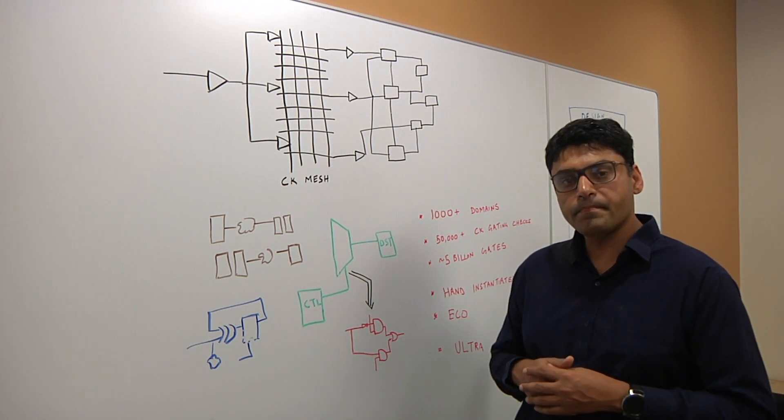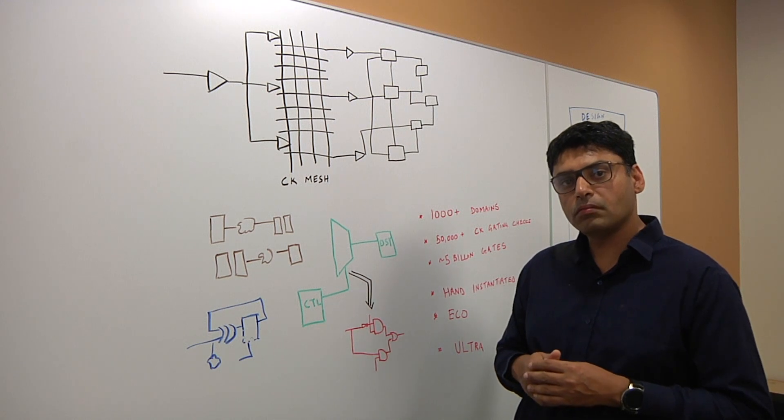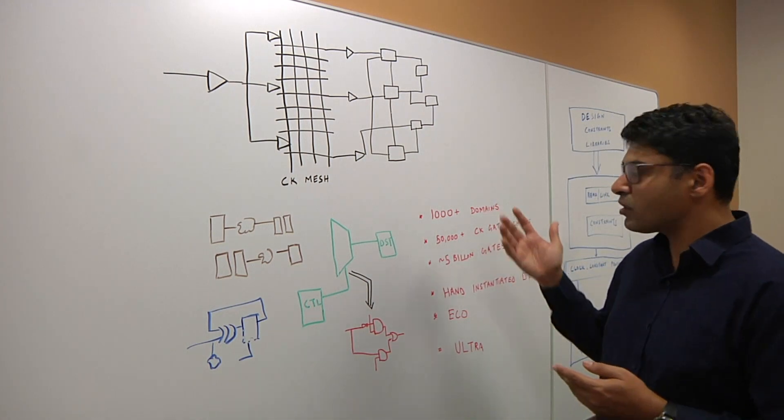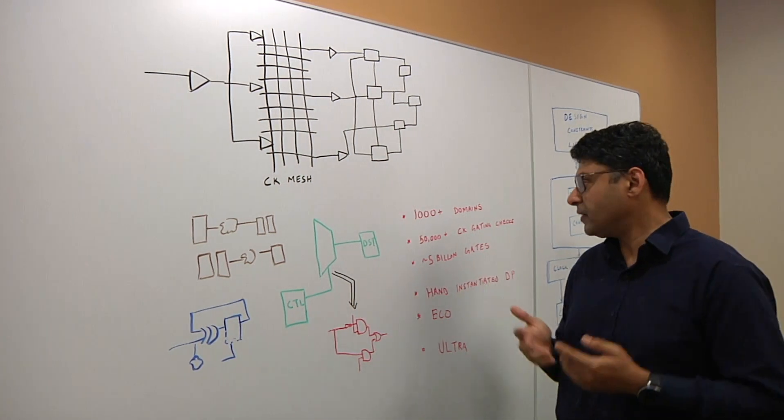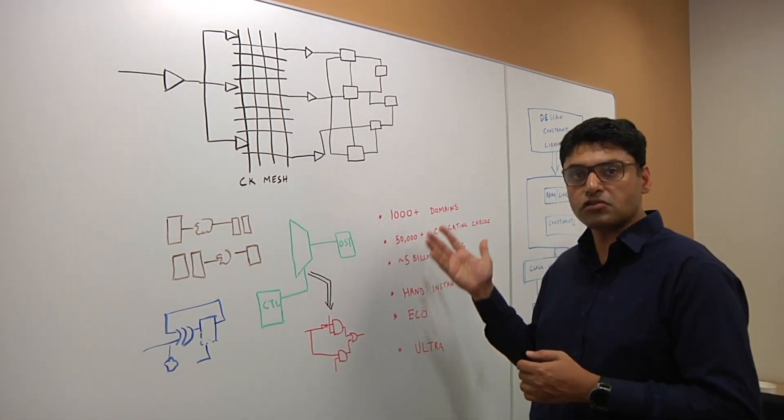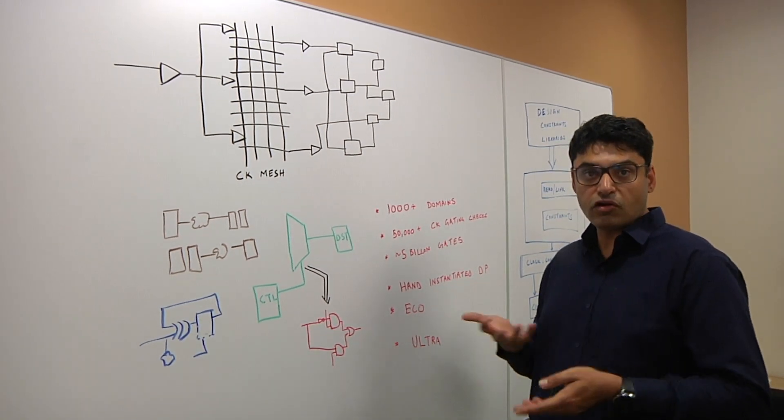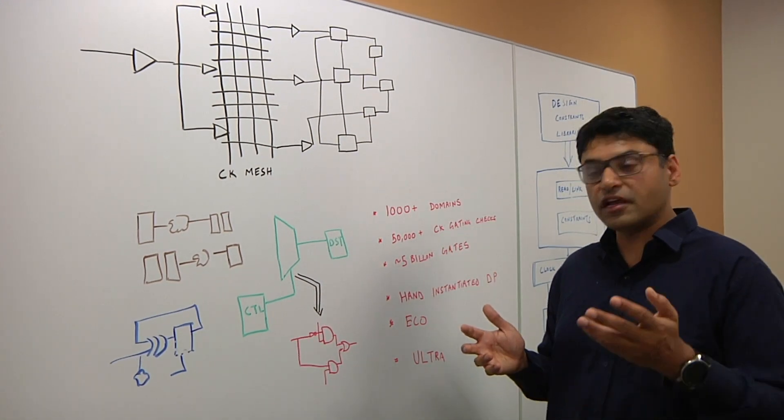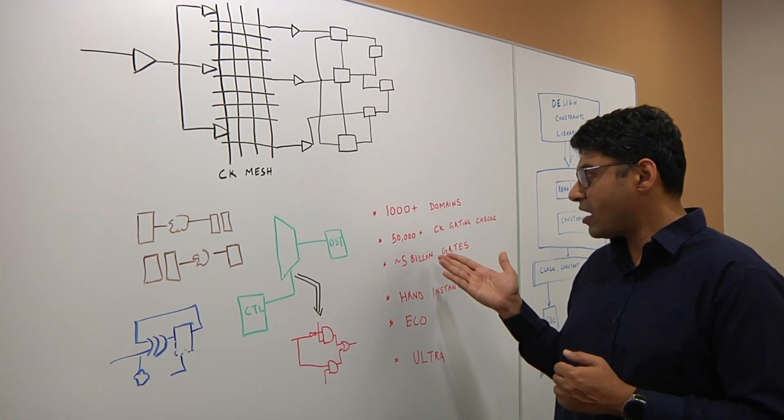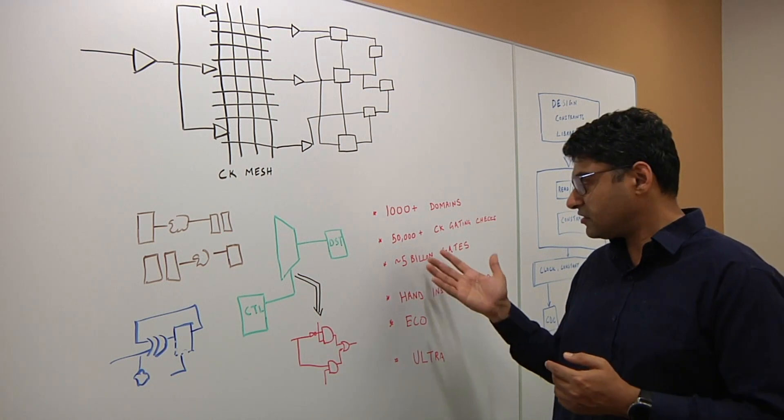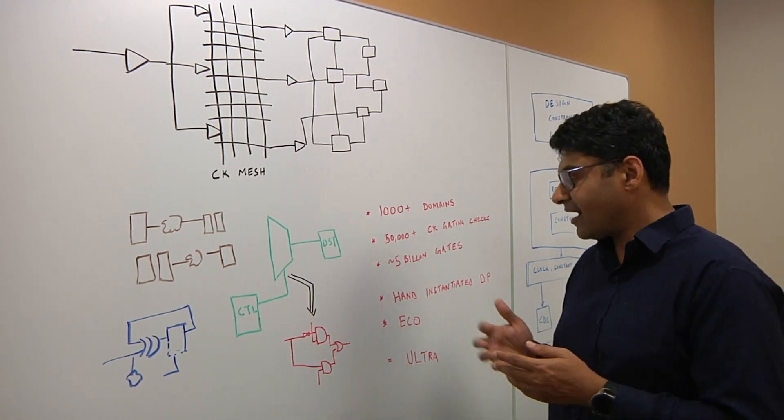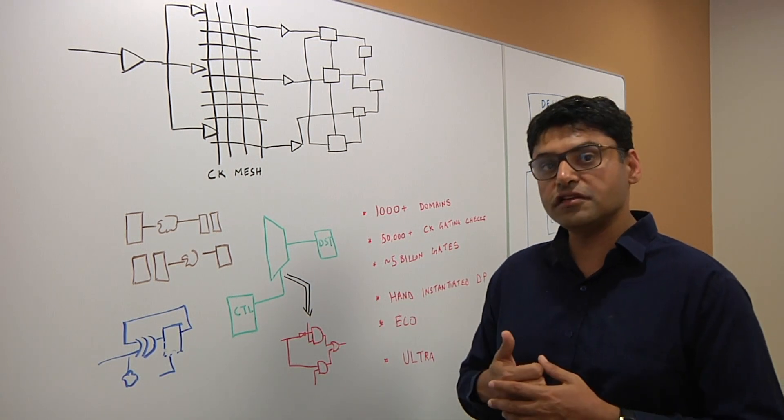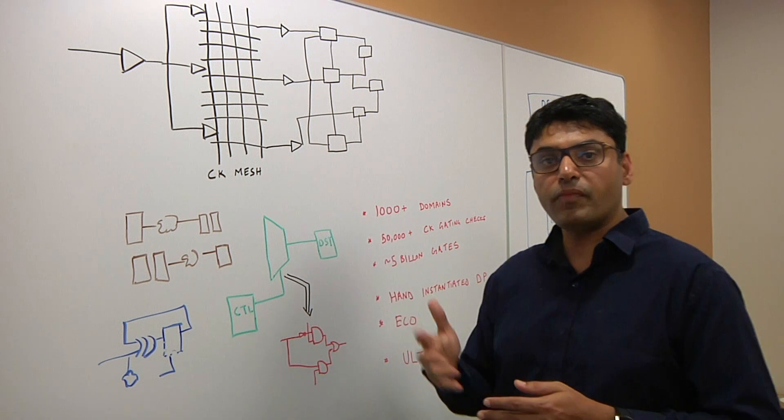And this has gotten a lot more complicated as we start getting more power domains, more processors doing different functions on a chip. If you look at current chips which are being taped out, we have 1,000 plus clock domains, not unusual, 50,000 plus clock gating checks. I have personally seen chips with over 100,000 clock gating checks on the asynchronous clock domains. Then you have about 5 billion gates, 6 billion gates, they're getting very common in many chips. Hand-instantiated data paths we discussed earlier, the logic which does not even exist in the RTL, and then ECOs and all these ultra compilations.